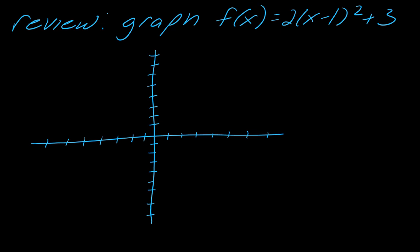In this case, I want to move one to the right and three up for my vertex, and then I'm going to go out one and up two in each direction, because two is that stretch factor that I've talked about in other videos. Here's my parabola. And we know that when a parabola is in this form, this is nice and simple to graph.